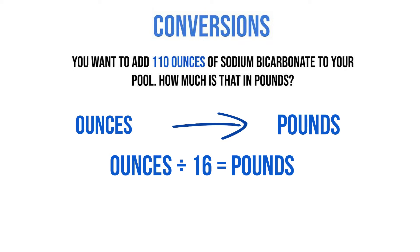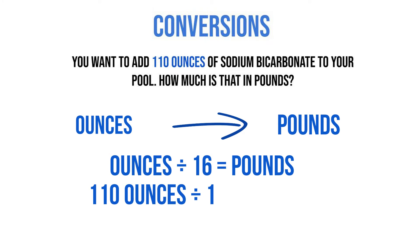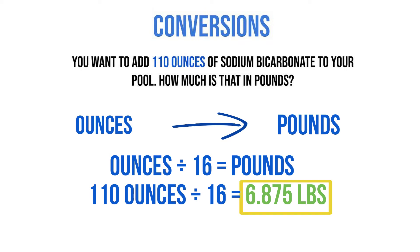So let's take our ounces, which is 110 ounces, and divide by 16. You should get 6.875 pounds. That's how many pounds are in 110 ounces.